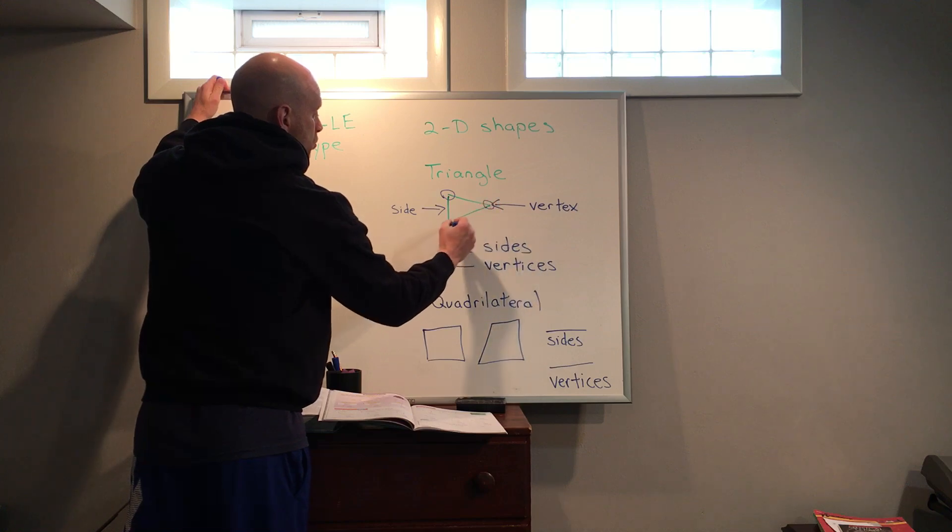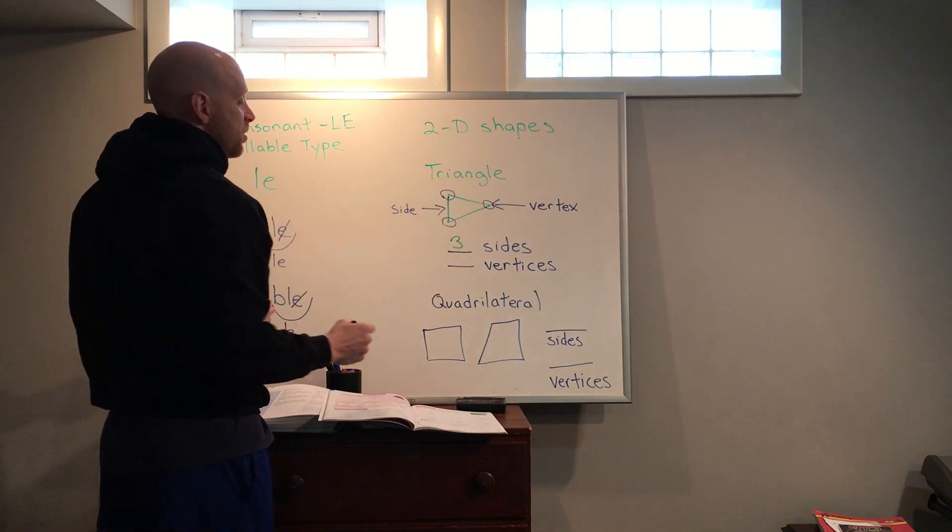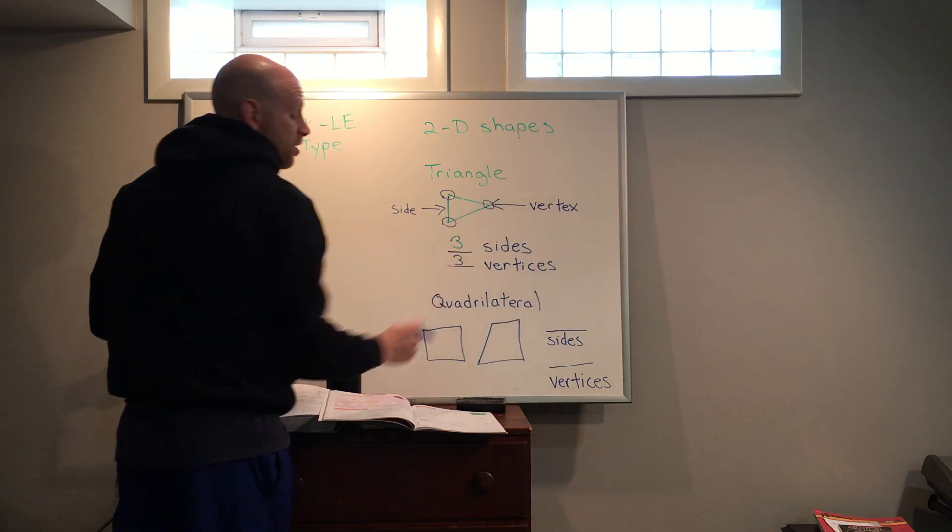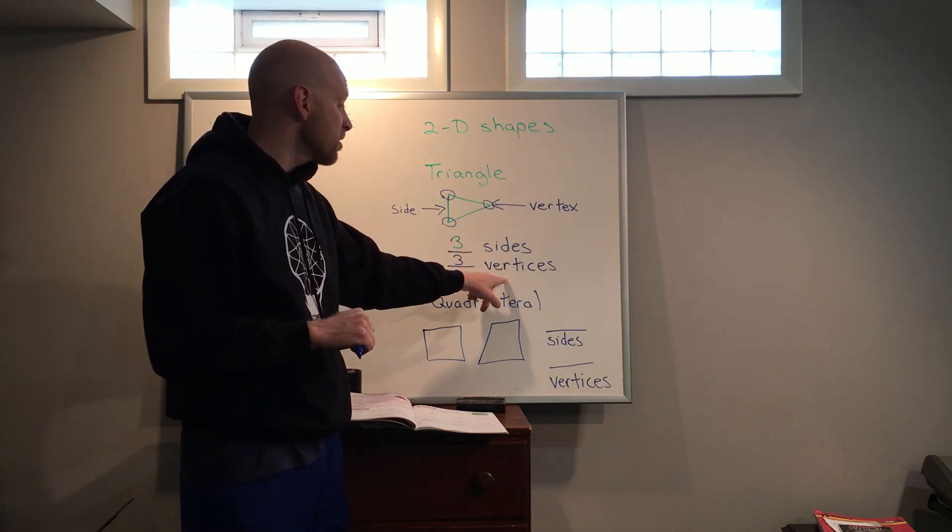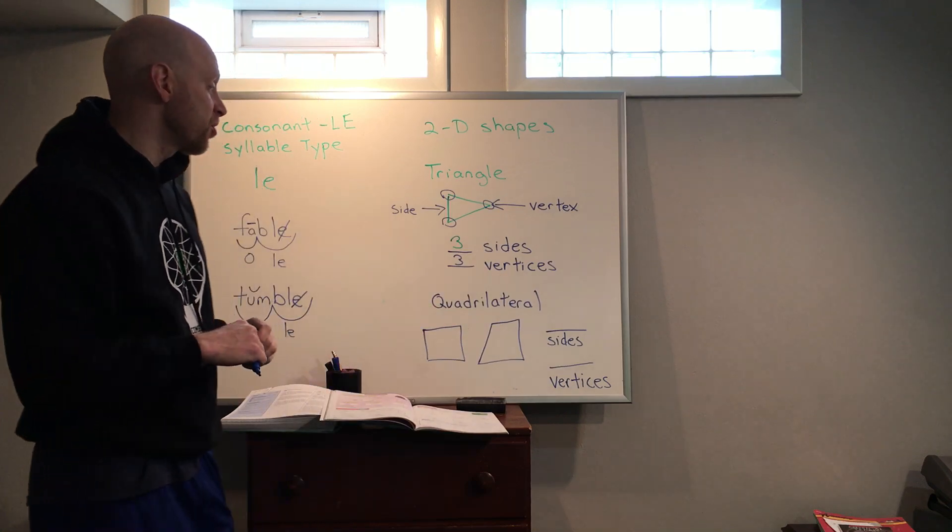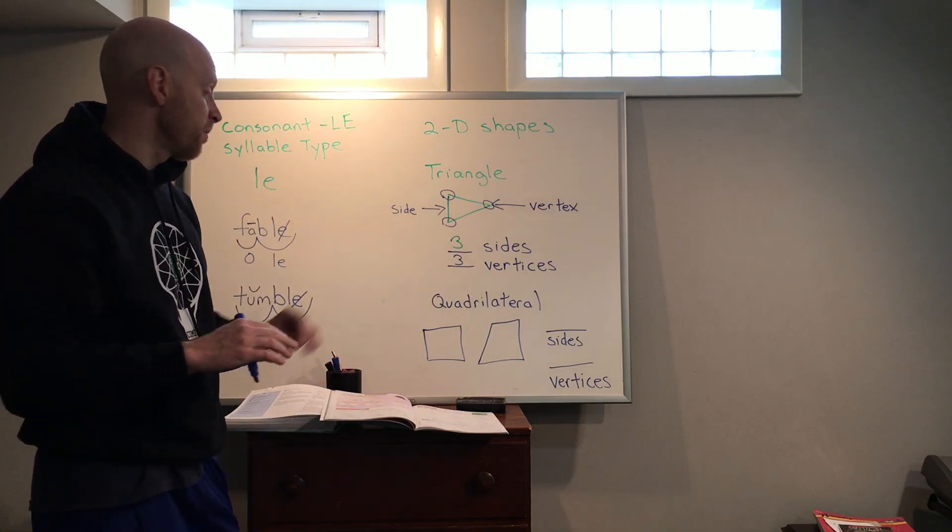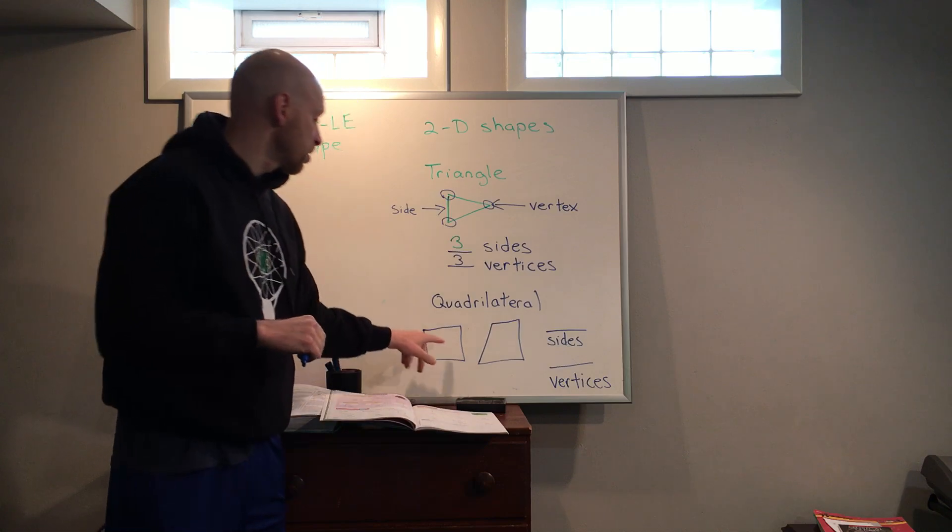Now where these sides meet, that point where those two lines are coming together, that's a vertex. So for a triangle we have one, two, three vertices. And what I want you to notice is with the amount of sides it has, it matches how many vertices it has as well.